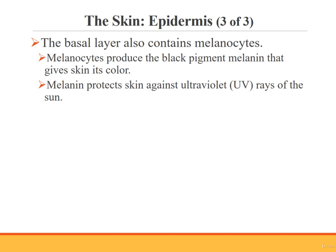The basal layer also contains cells called melanocytes. Melanocytes produce a black pigment called melanin. This pigment gives the skin its color and protects the skin against damage from the sun's ultraviolet or UV rays. The damage from UV rays includes leather-like skin, wrinkles, and skin cancer. People with dark skin have more melanin and hence more protection from UV rays.